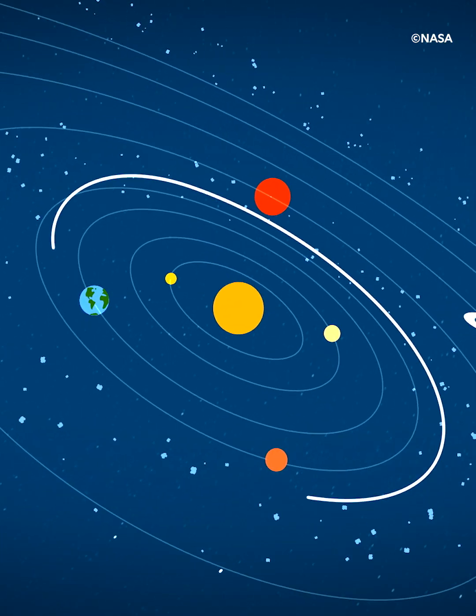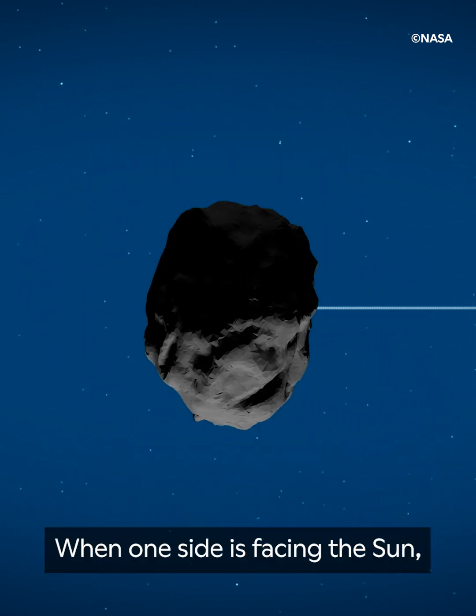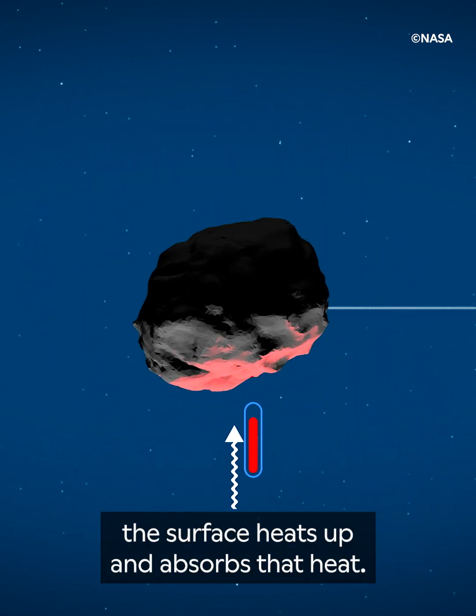Just like the Earth, asteroids rotate as they orbit the Sun. When one side is facing the Sun, the surface heats up and absorbs that heat.